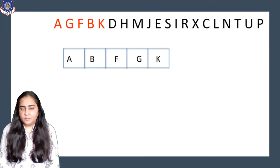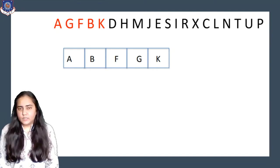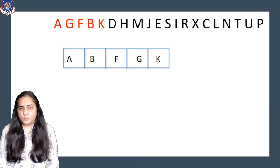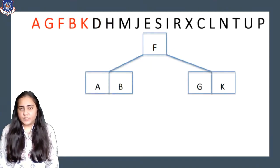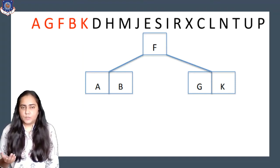Next I want to insert K. To insert K I would put it next to G, but there is no space. Inserting K causes the node to split. We take F to the top level, placing A and B on the left of F, and G and K on the right of F.